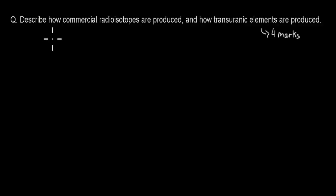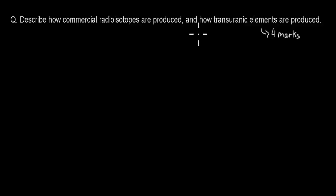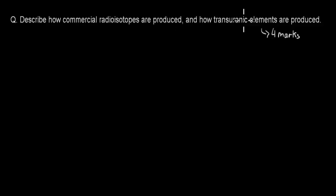Welcome to one of the past HSC exam questions on the nuclear chemistry chapter. In this video, I'll go over the actual question itself in a second, and then give you about five seconds to attempt to pause the video. The question says: describe how commercial radioisotopes are produced, and how transuranic elements are produced. It's worth four marks.